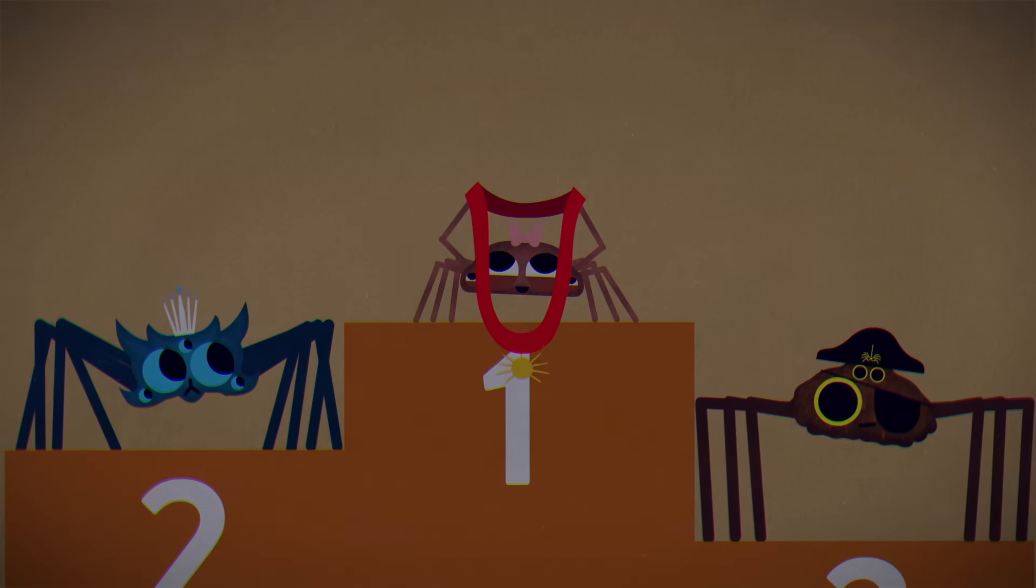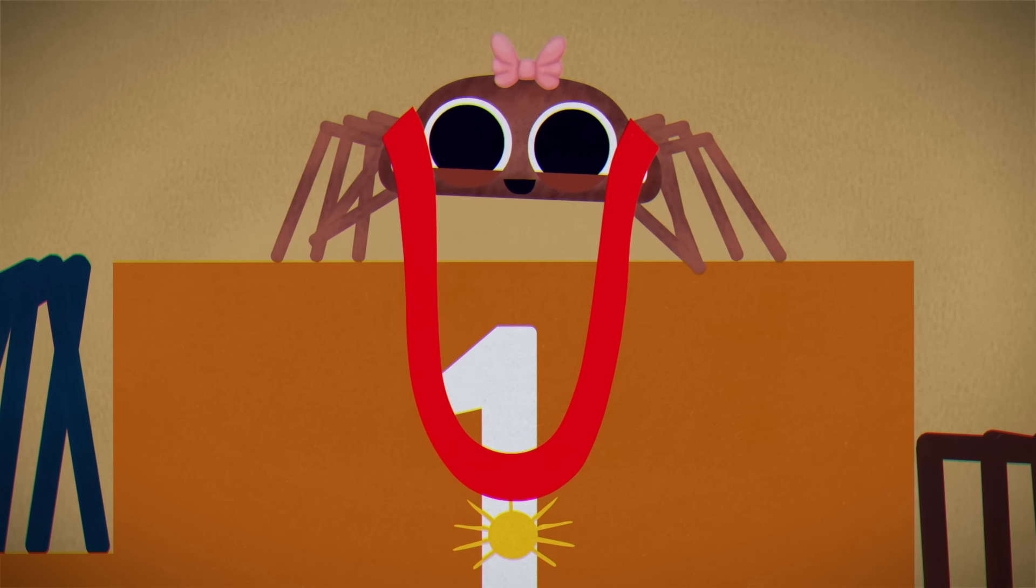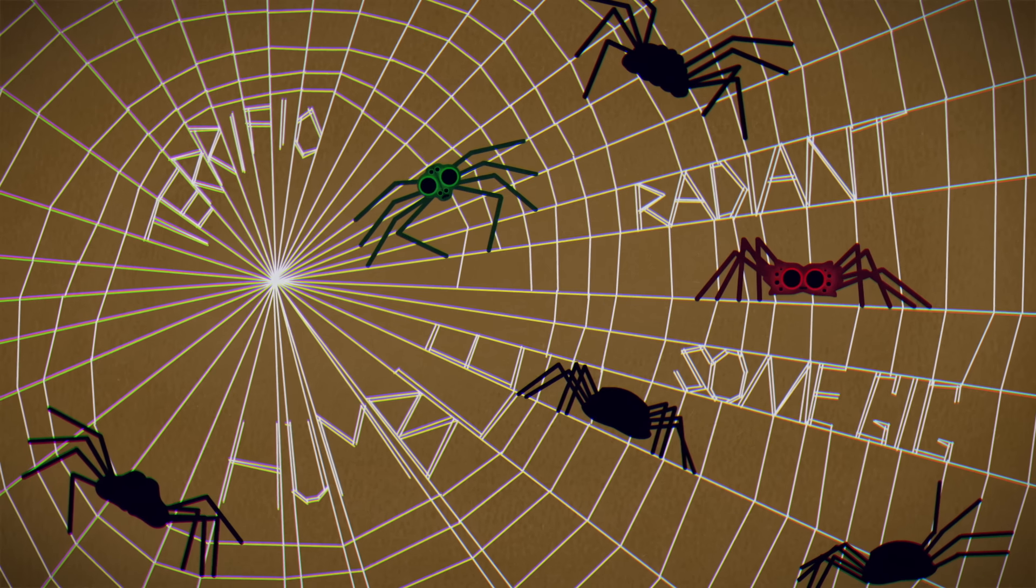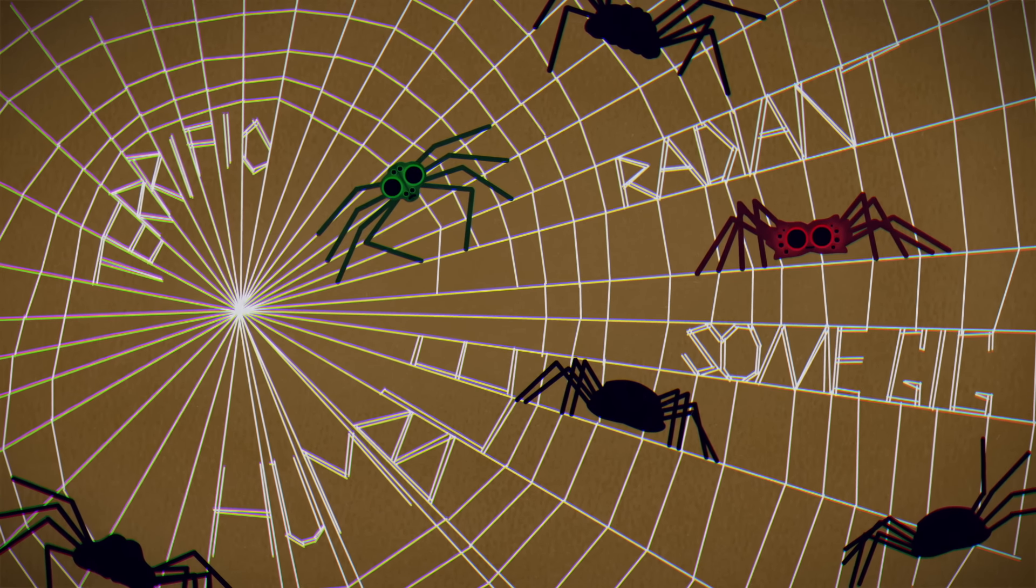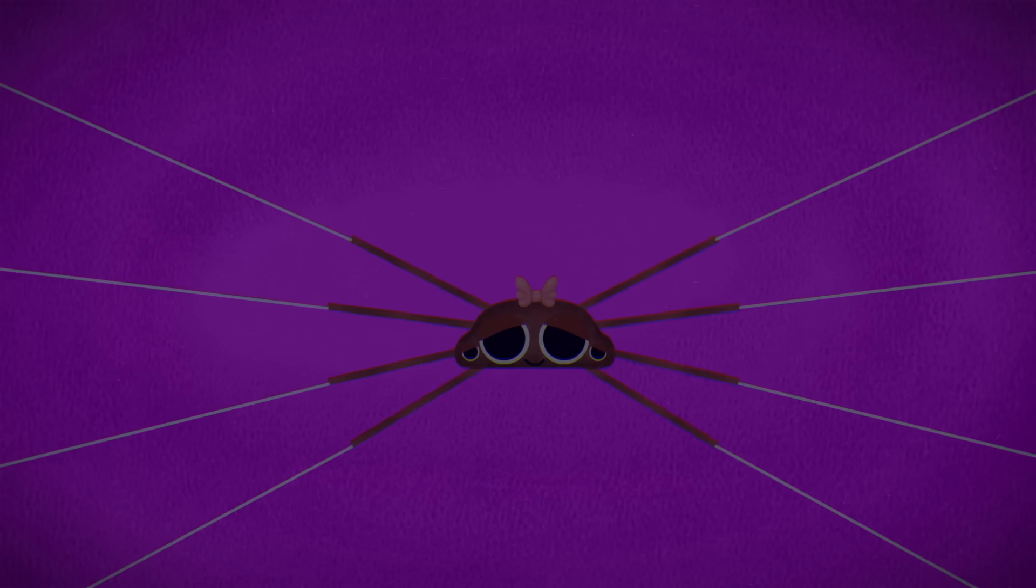You snatch the ceremonial sash from your opponent and wrap it around yourself. You're now the Spider Supreme, leader of all the world's eight-legged wonders. Just remember, with great spider power comes great spider responsibility.